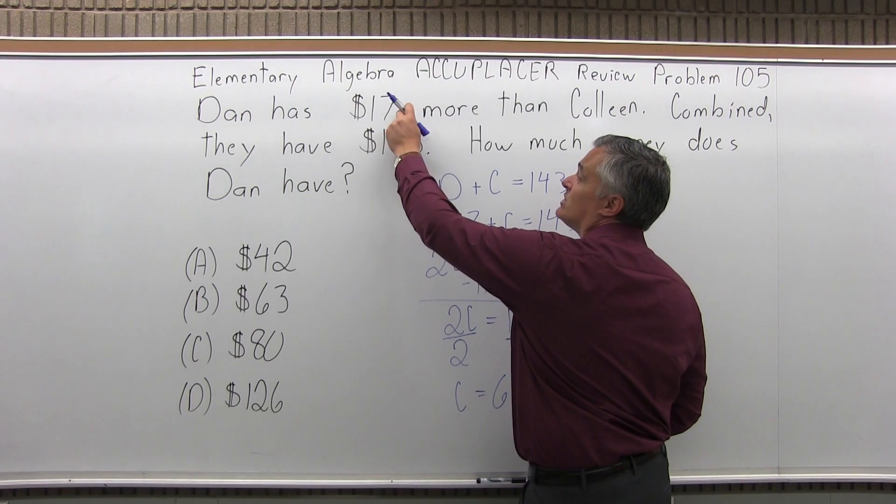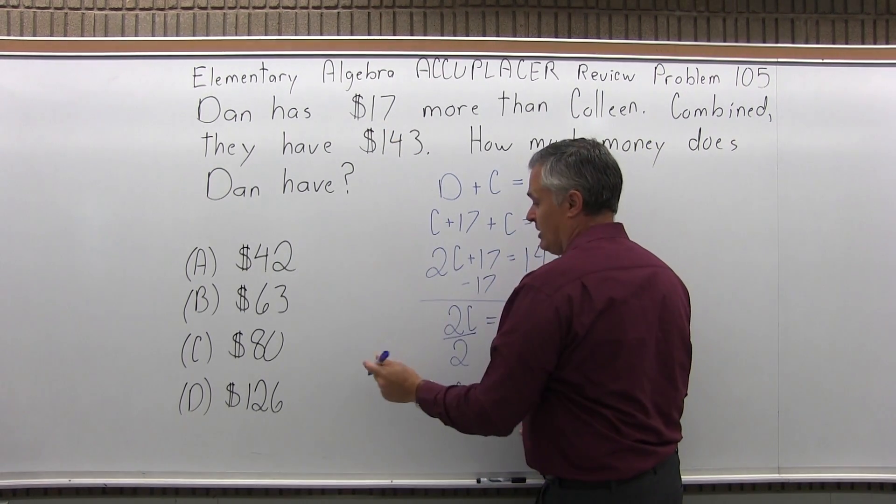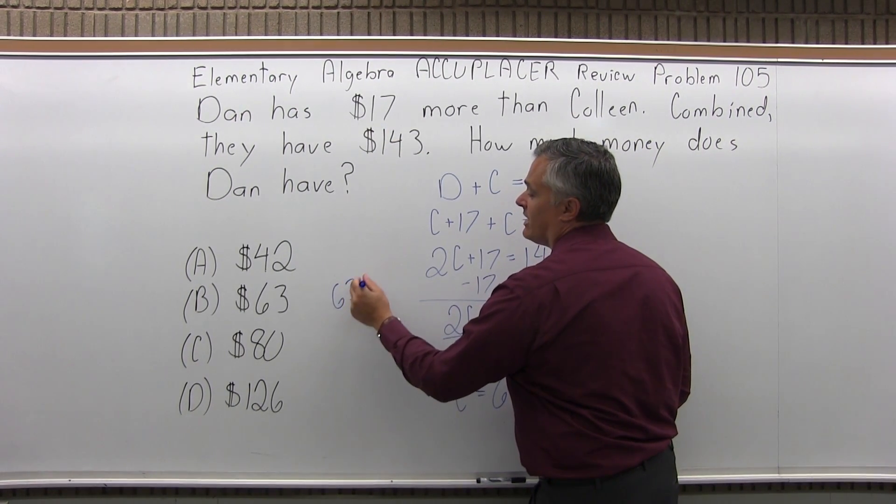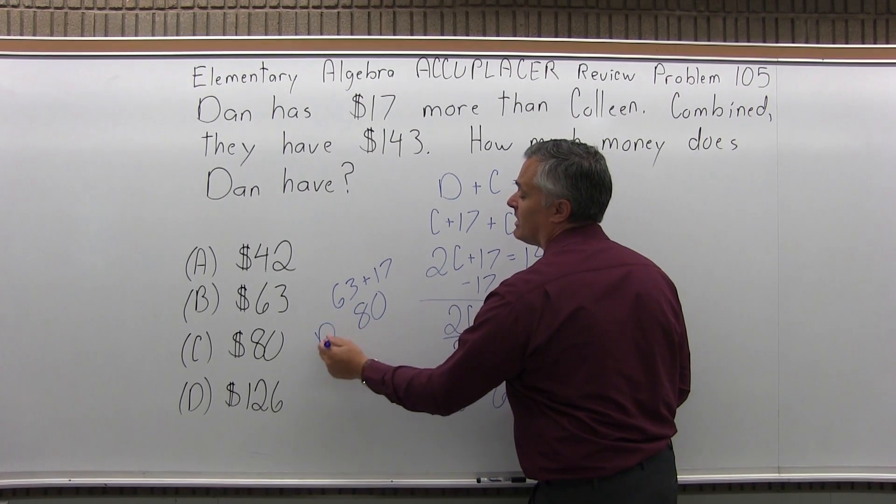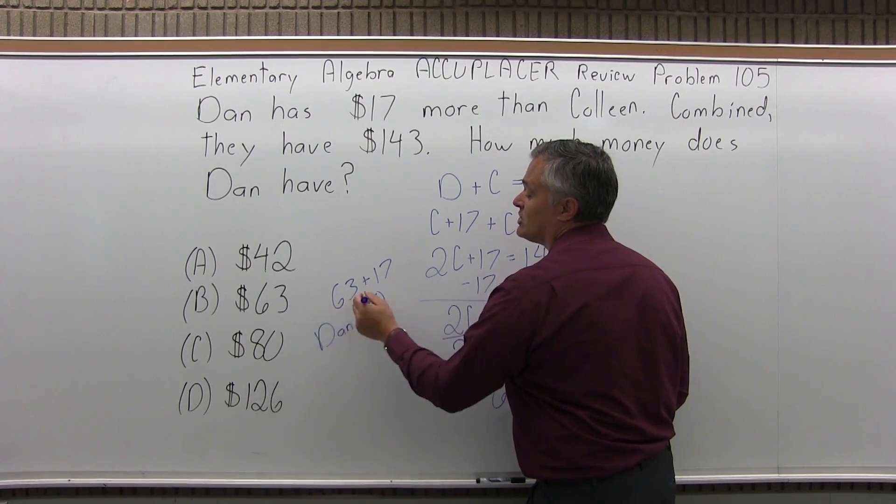Dan has $17 more than Colleen. So Colleen's 63 plus 17 more would add up to 80. That's how much Dan has. That's also one of the options.